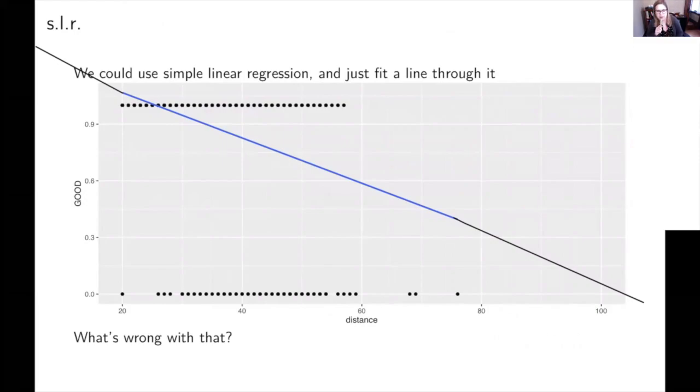And so we could use simple linear regression just to fit a line through it. And what's the problem with just doing this? Does anyone see anything that looks particularly bad here? Yeah, totally. So if I was at 40 yards, we'd say okay we want a prediction. What would it predict?